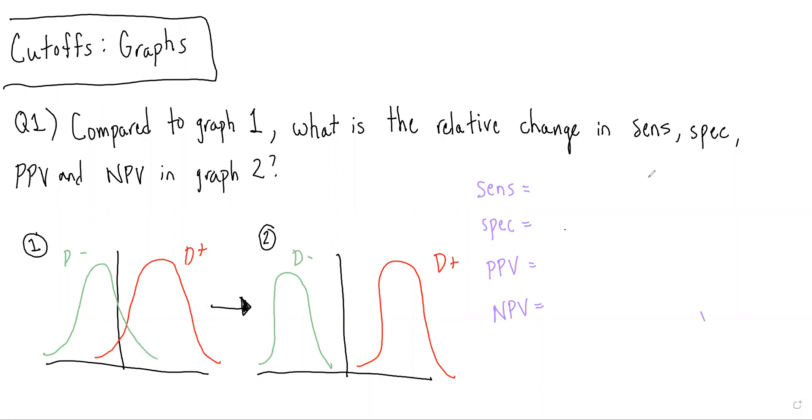So in this case, we're being asked: compared to graph one, what is the relative change in sensitivity, specificity, PPV, and NPV in graph two?